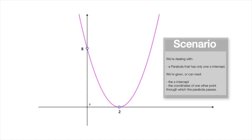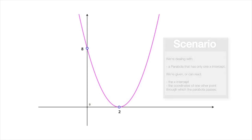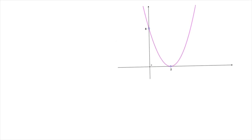We can see that we're given a parabola which cuts the x-axis when x equals 2 and cuts the y-axis when y equals 8. We're asked to find this parabola's equation. To do that, let me start by moving this to the side a little bit, and now we can get started.